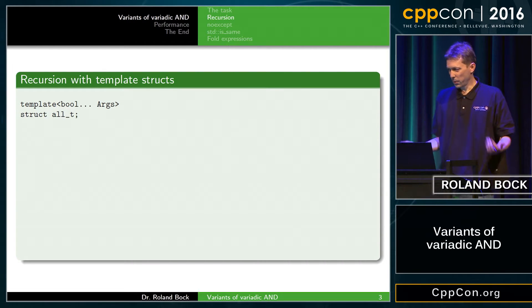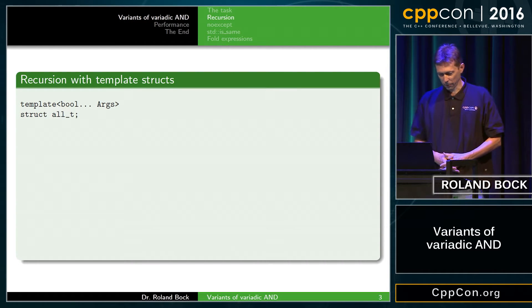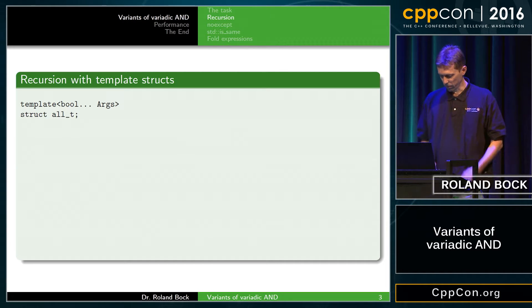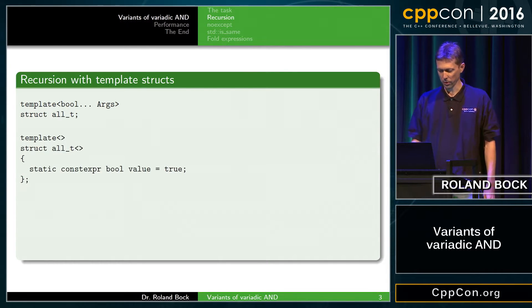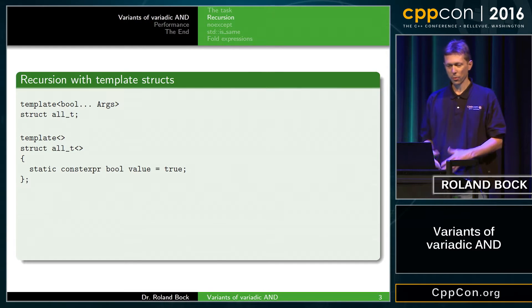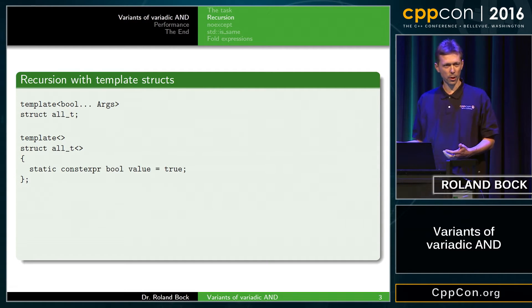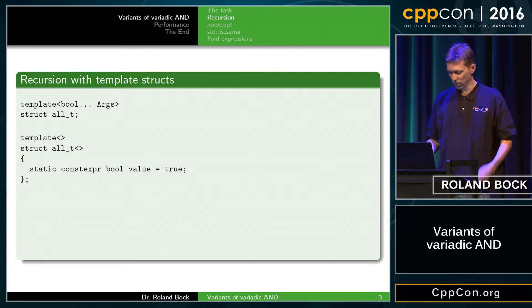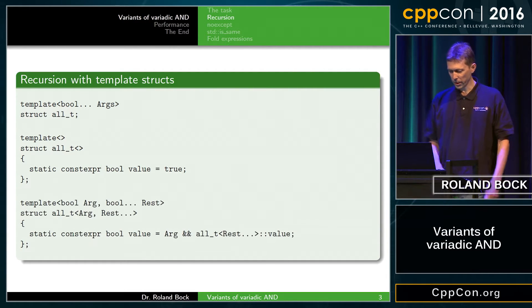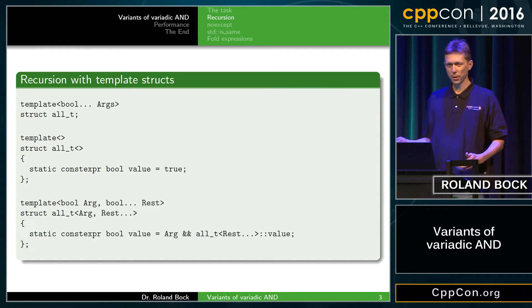If you have an introduction to variadic templates, the first thing that you hear is: use recursion. So we start with no arguments — if there are no arguments, then it should be true. Otherwise, we do recursion.